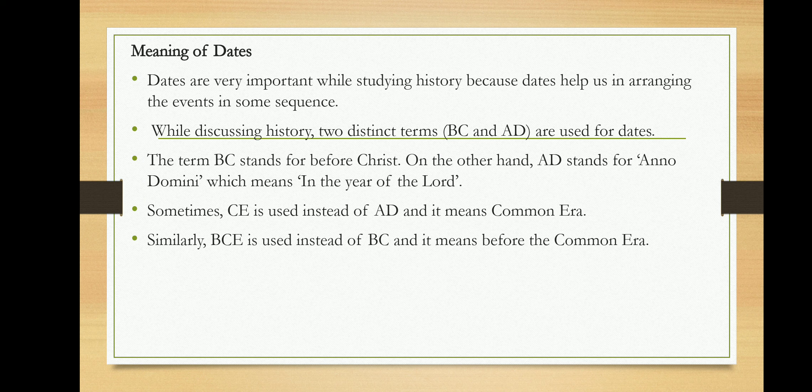Finally, let us understand what dates mean. Today we live in 2020 AD. AD stands for 'Anno Domini,' meaning 'in the year of the Lord,' telling us that 2020 years have passed since the birth of Jesus Christ. Many important historical dates prior to the birth of Christ are referred to as BC. CE, meaning Common Era, is also used, and BCE — Before Common Era — is used instead of BC.